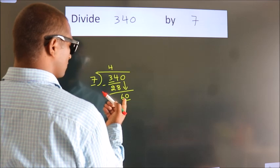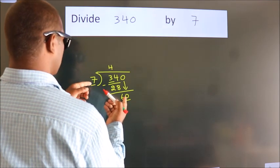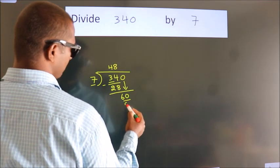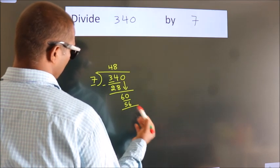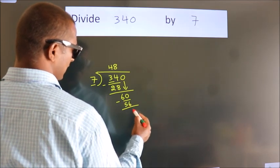A number close to 60 in the 7 table is 7 eights, 56. Now we subtract. We get 4.